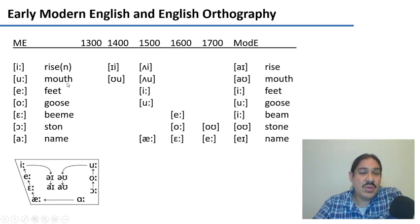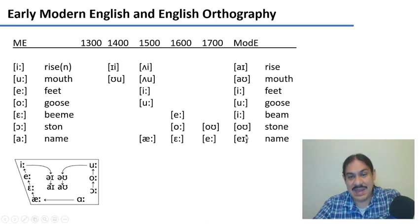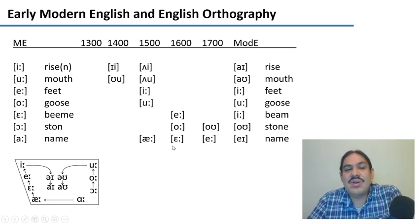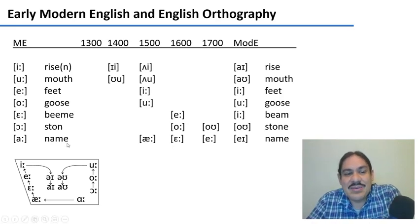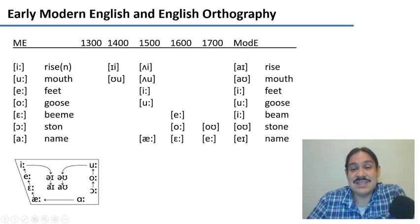A word like 'mouth' would be pronounced 'muth,' then 'mowth,' and ultimately 'mouth.' A word like 'name' would be pronounced 'nam,' then 'naem,' and ultimately 'name.' Notice that the old pronunciation is exactly the same as we would have in German now — 'nam,' for example.